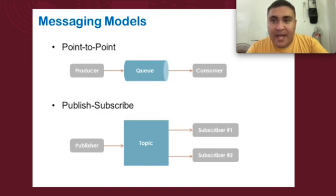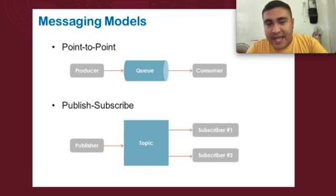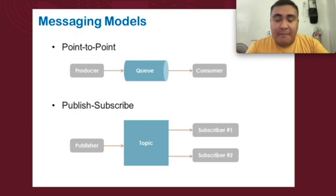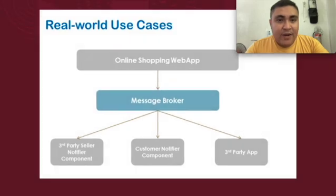In most cases, you implement point-to-point if the system is very particular about who will receive the data. If you are creating a middleware where everyone should receive whatever is being published by any end user, you use the publish and subscribe messaging model.